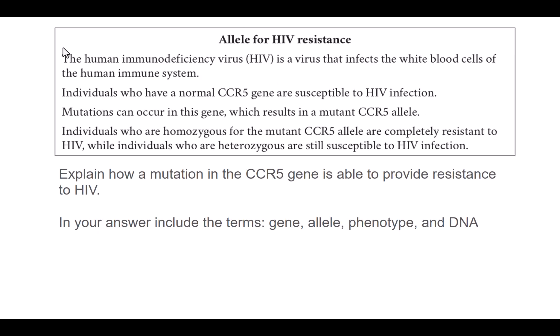To start us off, we're going to have a look at the sample question that's already on NZQA. This is about the allele for HIV resistance. The human immunodeficiency virus is a virus that infects the white blood cells of the human immune system. Individuals who have a normal CCR5 gene are susceptible to HIV infection. Mutations can occur in this gene which results in a mutant CCR5 allele. Individuals who are homozygous for the mutant CCR5 allele are completely resistant to HIV, while individuals who are heterozygous are still susceptible to HIV infection.